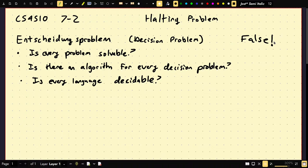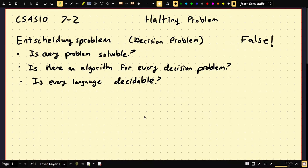There are problems you cannot solve. And not only can you not solve them, you can prove that you can't solve them. We can actually give two arguments in favor of the false answer to this question. First, we're going to use something called Cantor's theorem.